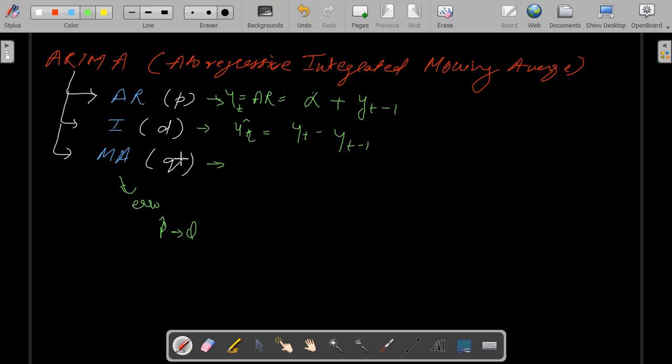In ARIMA, we have y_t equals, e_t equals beta_1 multiplied by e_{t-1}. The error of the previous year is added back to predict the error of the current year.